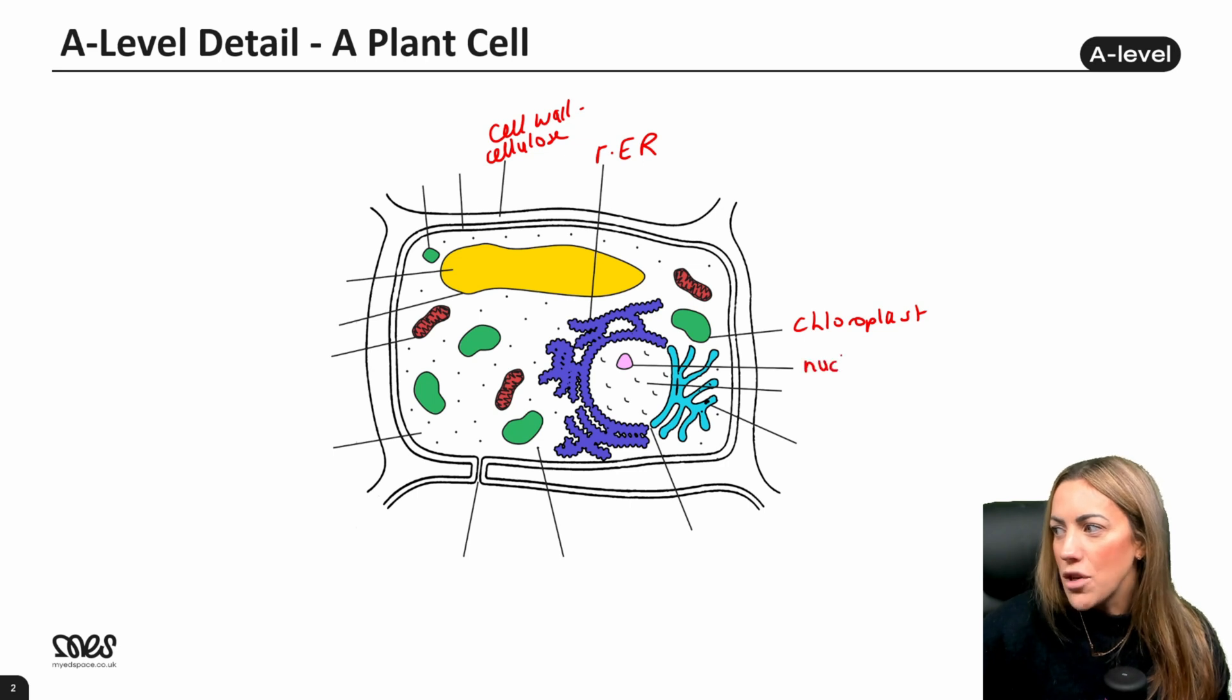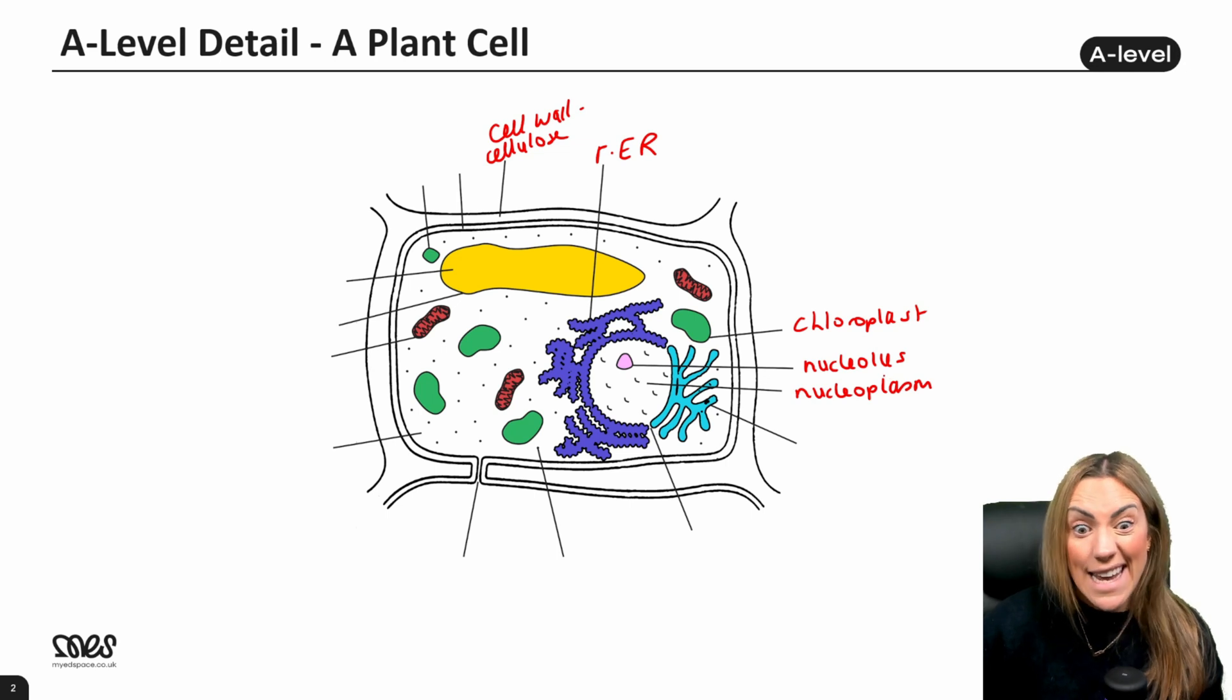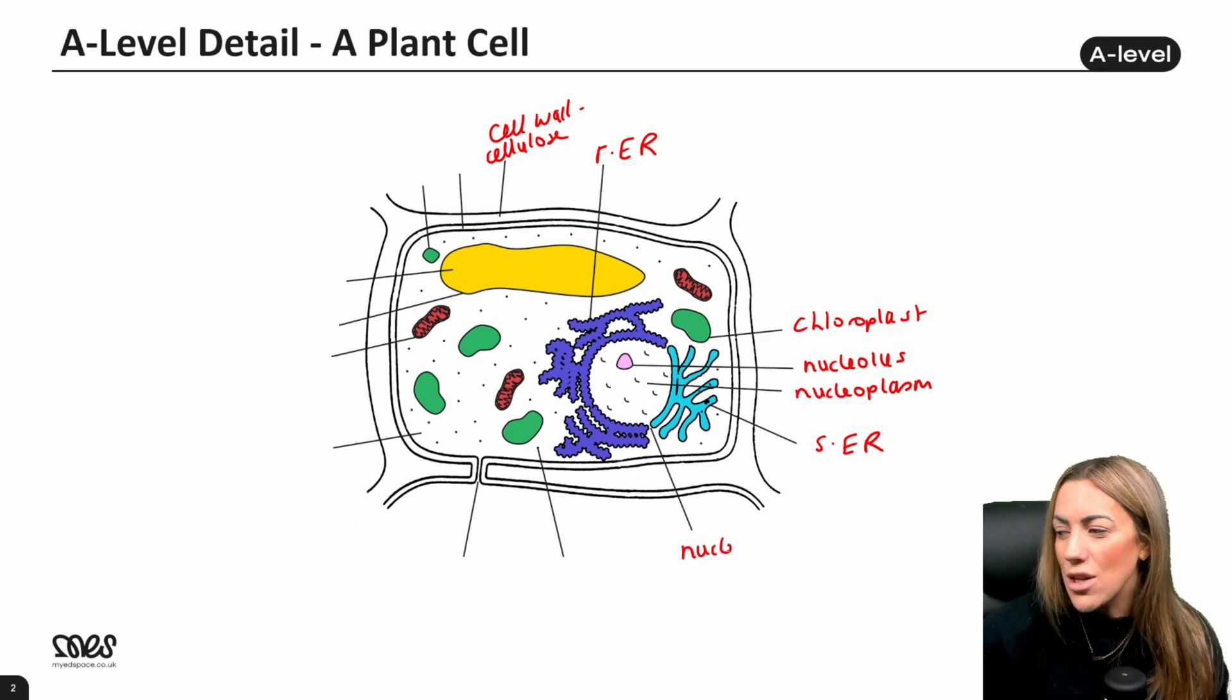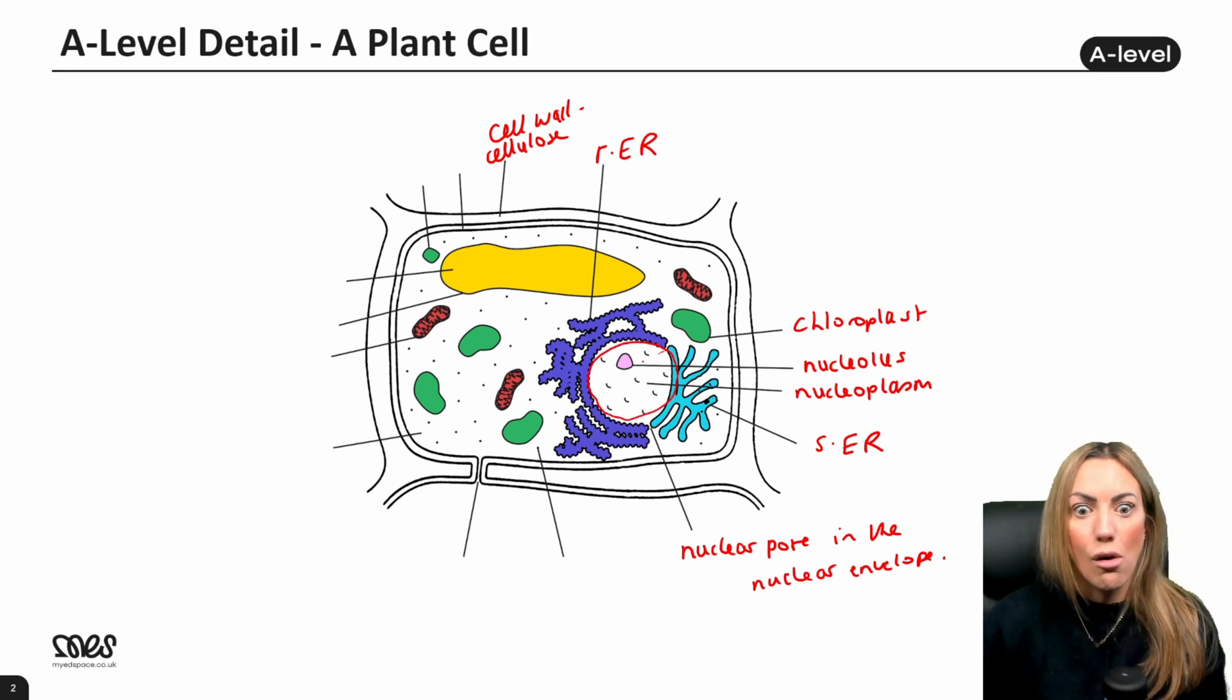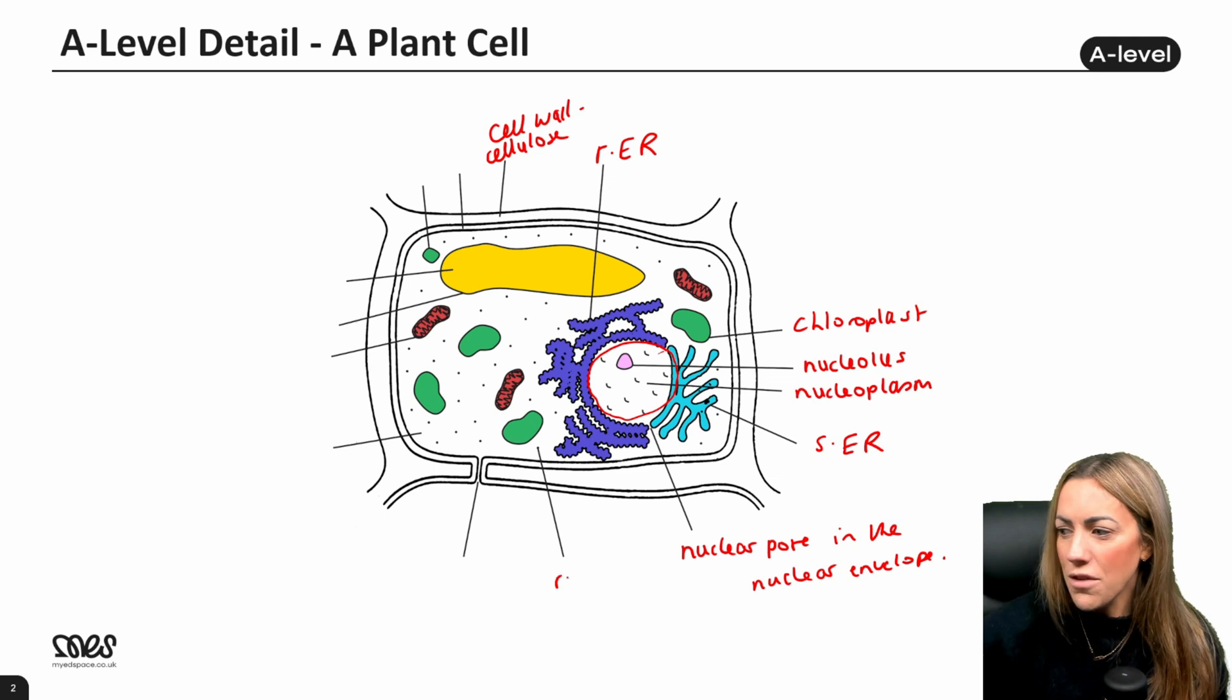In the middle of the nucleus, we have the nucleolus, which is where ribosomes are produced. Inside the nucleus, we have the nucleoplasm, which is where we find the DNA or chromatin because the DNA is wrapped around histone proteins. Here we've got the smooth endoplasmic reticulum, which is responsible for synthesizing lipids and carbohydrates. Here we've got a nuclear pore in the nuclear envelope or nuclear membrane. This whole structure is the nucleus. There's just lots of different parts to it. Over here, we've got a ribosome, which would be a larger 80S ribosome, same as the ribosomes that are attached to the rough ER's surface.